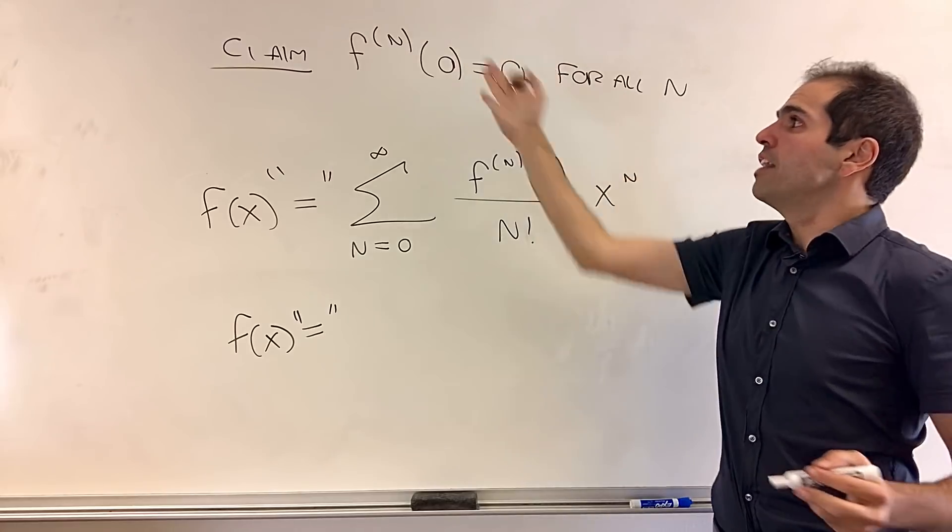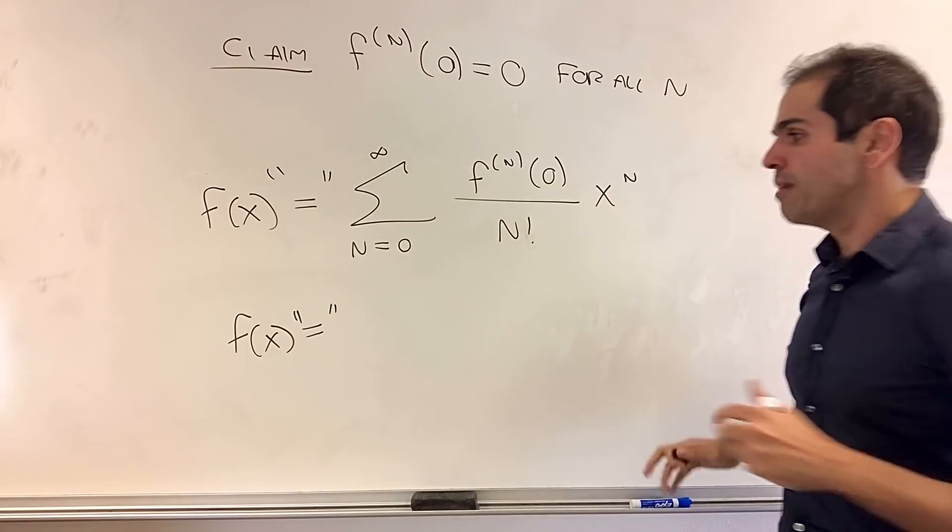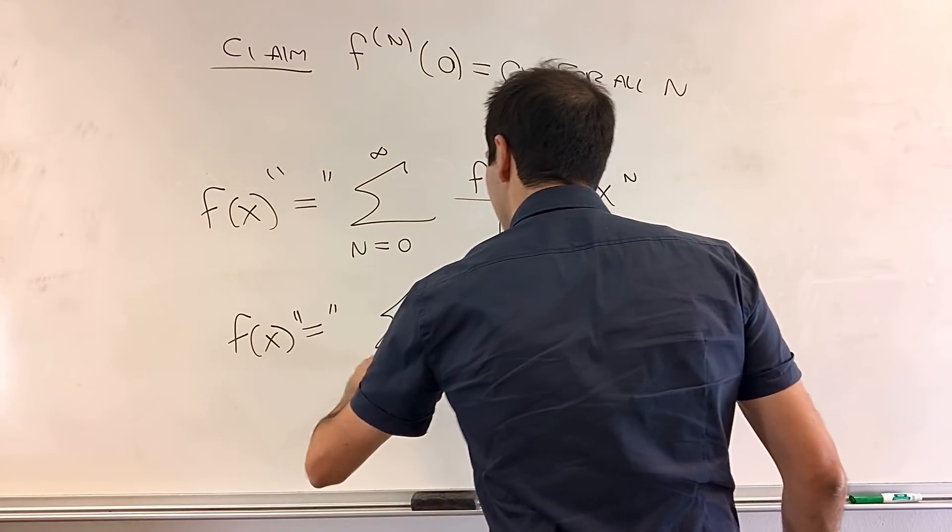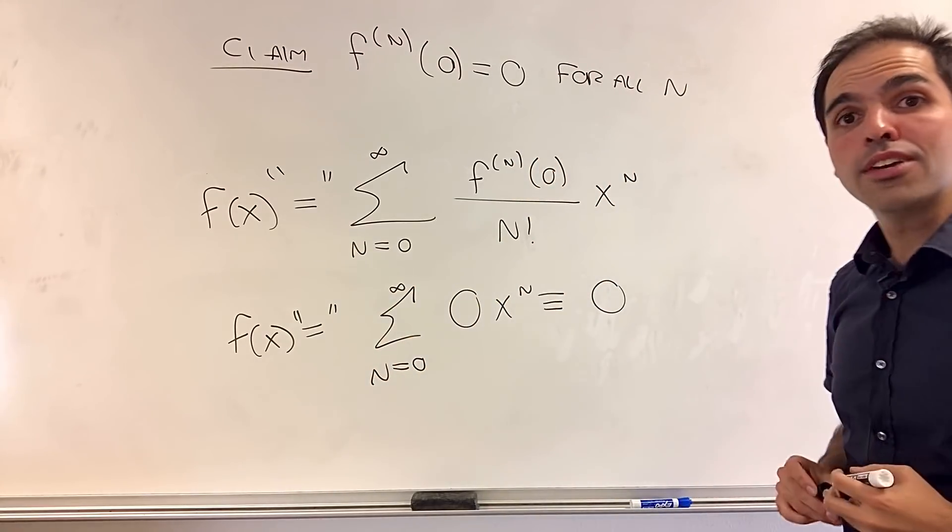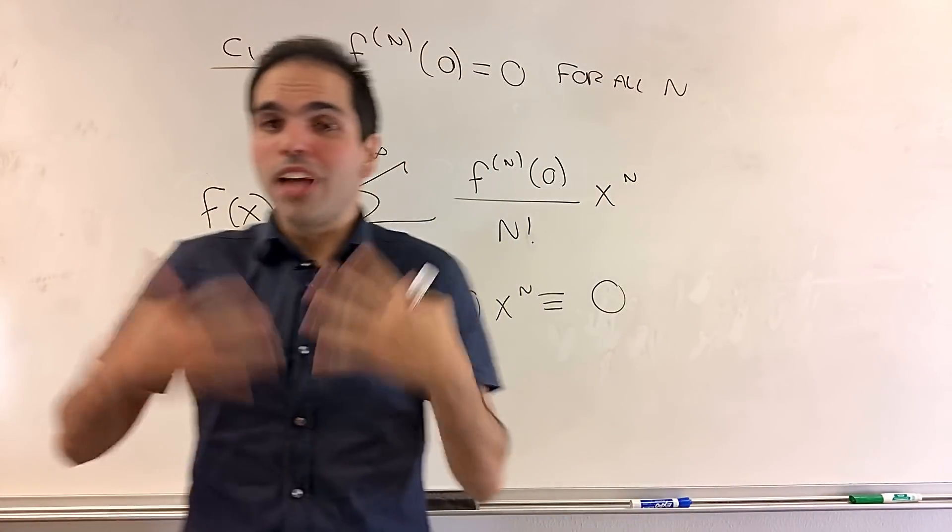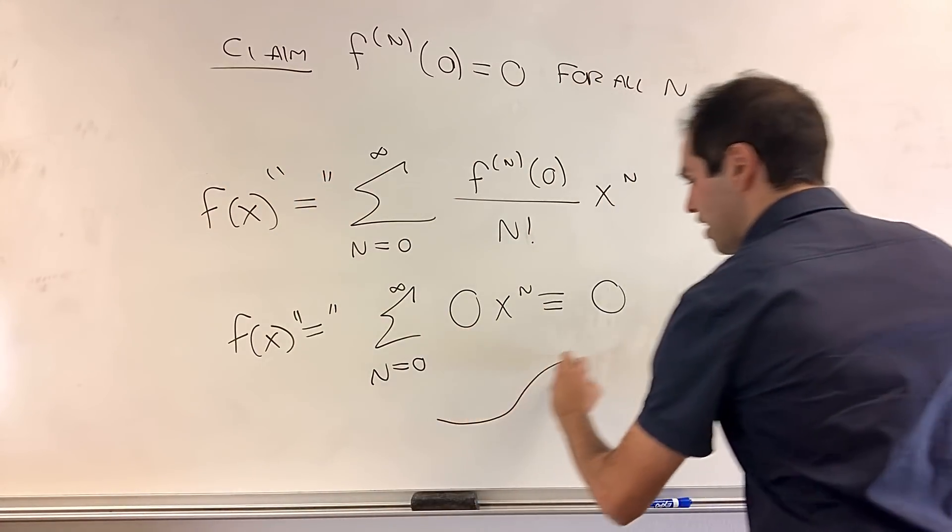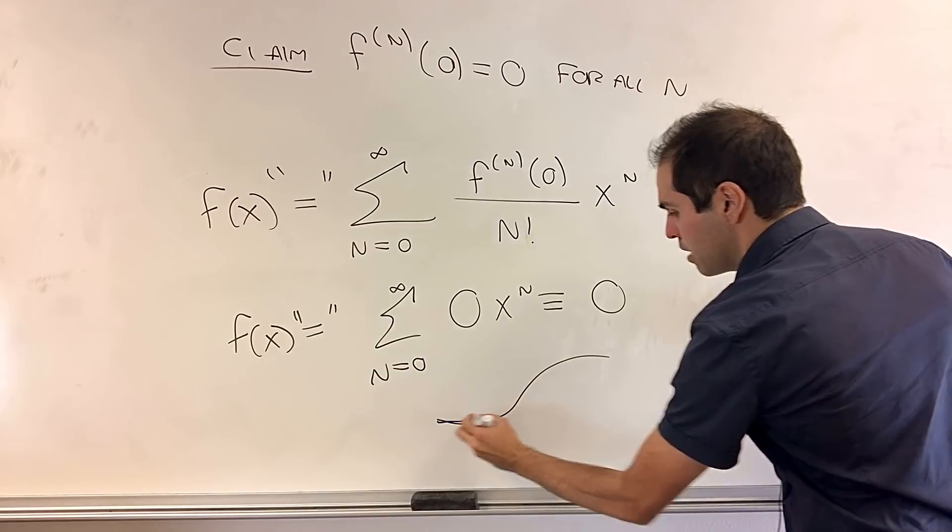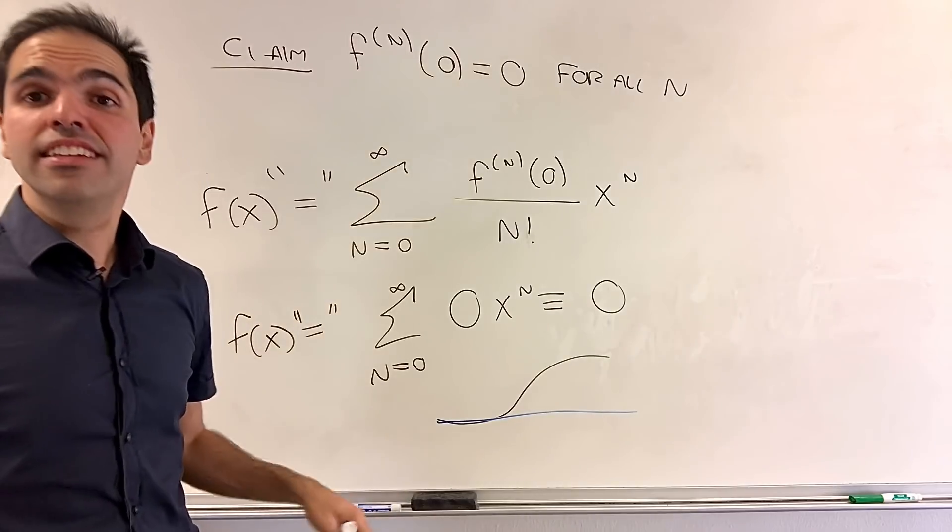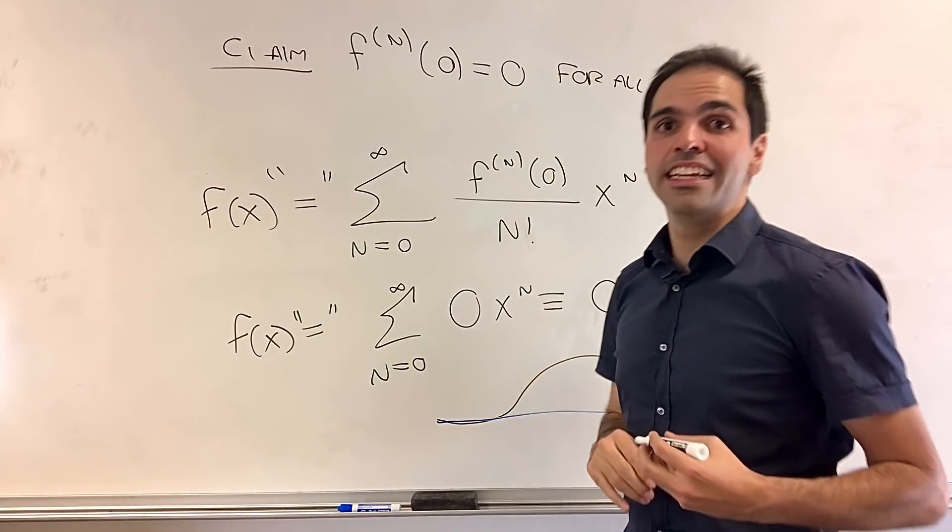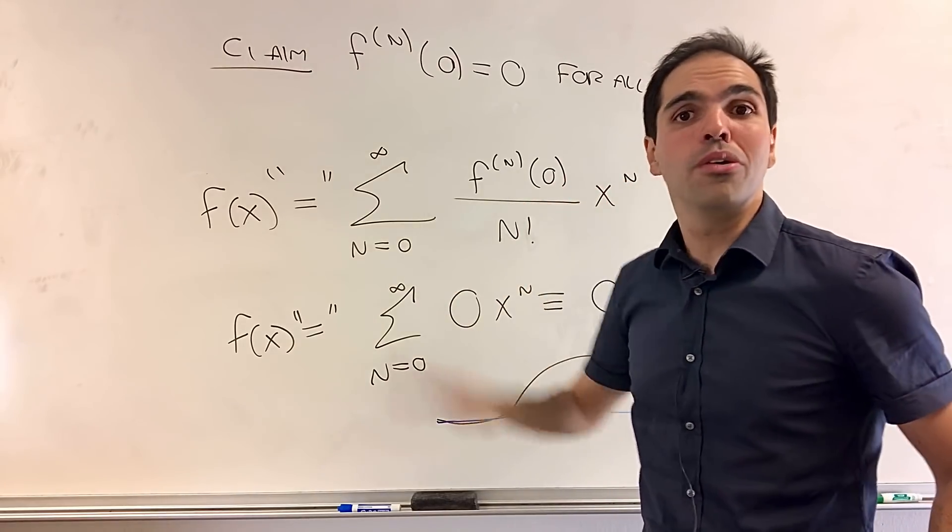But look, for this function, what happens? Well, on the one hand, we have f of x. On the other hand, by this claim, all the derivatives of f at zero are zero. So this Maclaurin series becomes a sum from n from zero to infinity of zero, x to the n, which is identically equal to the zero function, which I hope you agree is not a good approximation to the function at all. Because again, the function was going like this, and we're saying, well, it's approximately equal to this. Again, not very good. And this is what's called a non-analytic function. So it's a function whose Taylor series doesn't go to f at all.